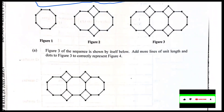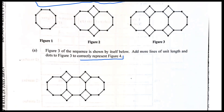They're asking you to represent the fourth figure, number four. Add more lines, unit lengths, and dots to figure three so you can see that they're all developed from each other. If I look at figure two, I'm seeing figure one in there — basically there was a figure one and a few things were done to it to create figure two.